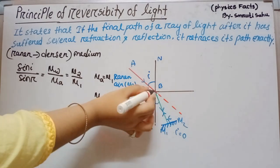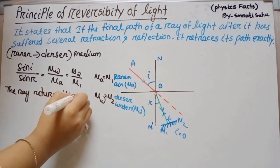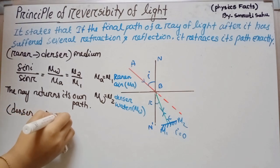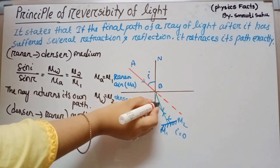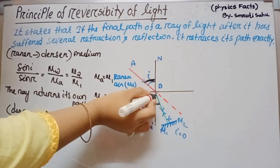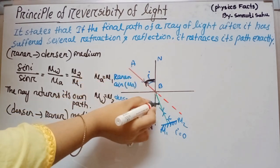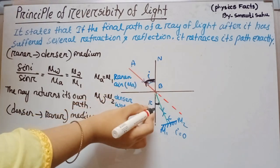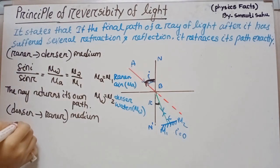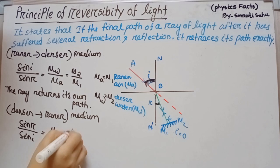When the ray retraces its path, the ray passes from the denser medium to the rarer medium. In the second case, this angle is the incident angle and this angle is the angle of refraction. BC is the incident ray and AB is the refracted ray. For the second case: sin R / sin I = μ₁ / μ₂, which equals μ_A / μ_W.